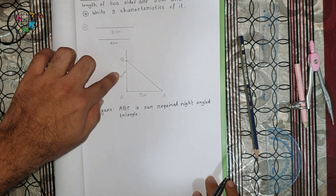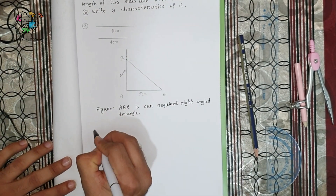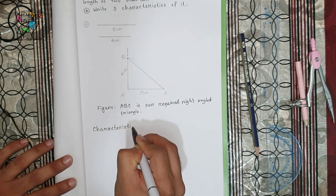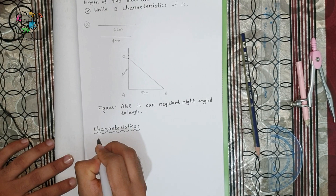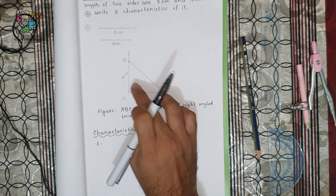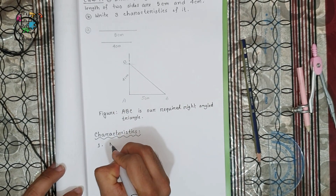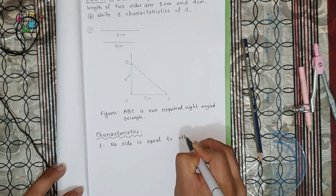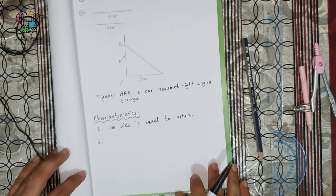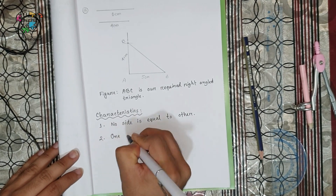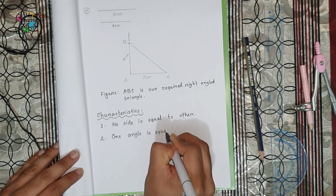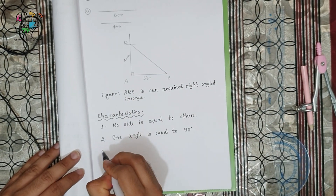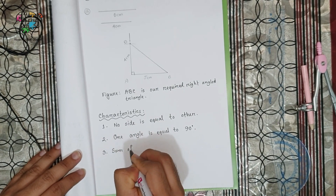Remember, you have to use pencil for the drawing and pen for the writing. Now write the characteristics. Number one: no sides are equal to other. Number two: one angle is equal to 90 degrees — because this angle is equal to 90 degrees. Number three — the common one — the sum of three angles is equal to 180 degrees.